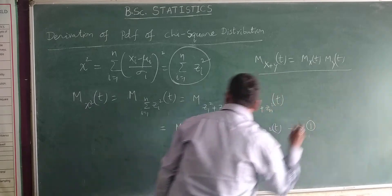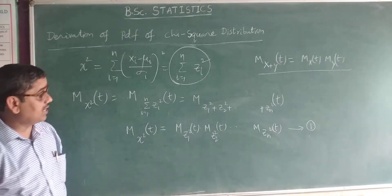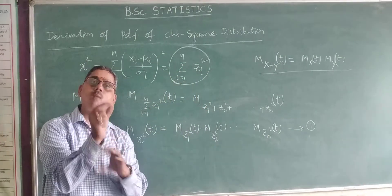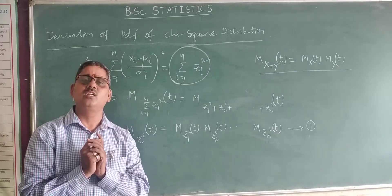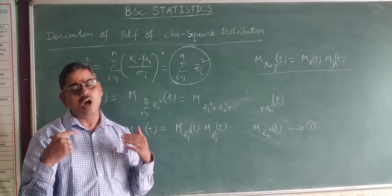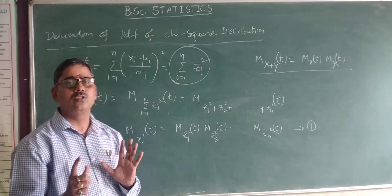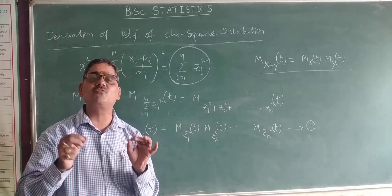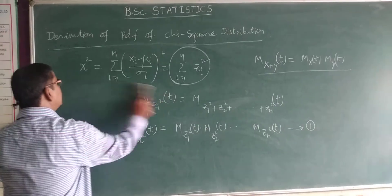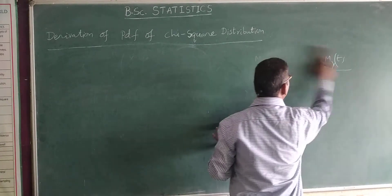I now calculate one common value: the moment generating function M_{z²}(t). Since z is a standard normal variate, M_{z²}(t) = E[e^{t z²}]. Since z is a continuous random variable, this becomes the integral from minus infinity to plus infinity of e^{t z²} · φ(z) dz, where φ(z) is the probability density function of the standard normal distribution: φ(z) = (1/√(2π)) · e^{-z²/2}.